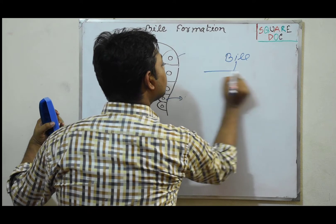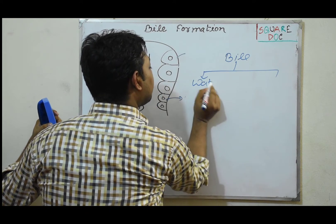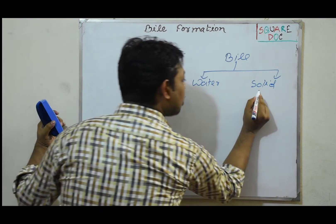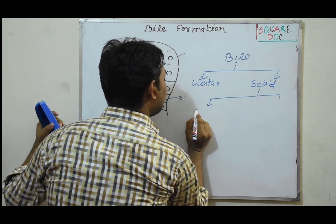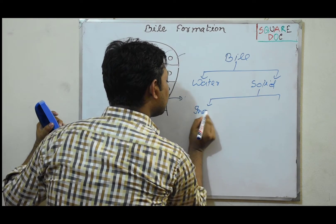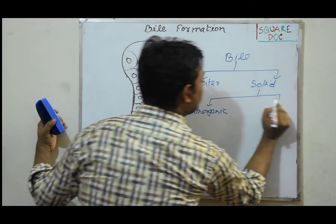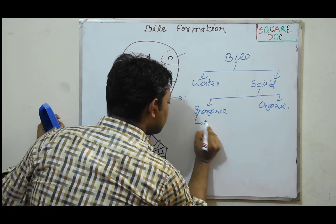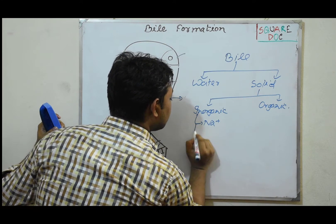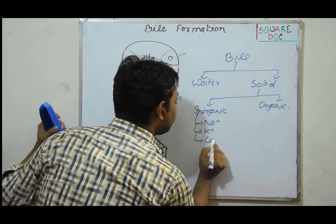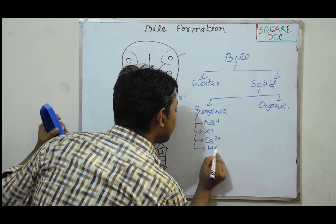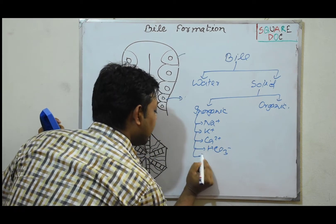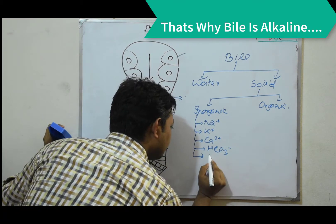Bile has a composition. It contains solid substances — both inorganic and organic. The inorganic components include sodium, potassium, and calcium.